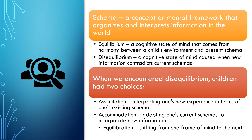The first state of mind we often find ourselves in after creating a schema is a state called equilibrium — when the schema we've developed seems to be working and applying to what we're encountering in the world. He insisted that since many of our early schemas are inherently imperfect, eventually we're going to run into conflicting information that doesn't match up with our schemas. At this point, we enter a state of mind called disequilibrium, where we've got a schema that doesn't seem to be working perfectly. When we encounter this disequilibrium, we get uncomfortable and try to find ways to return to equilibrium.